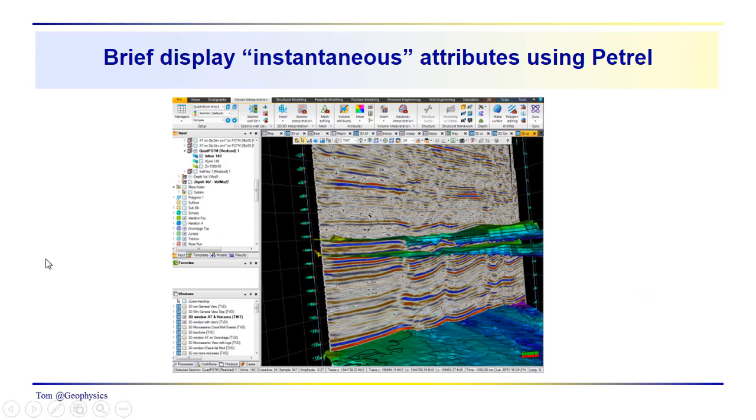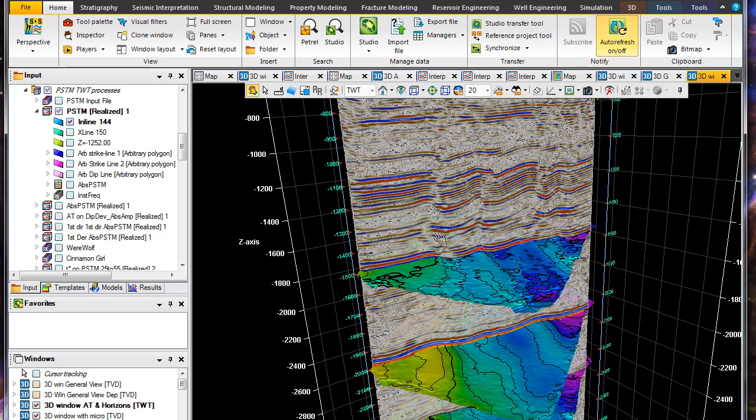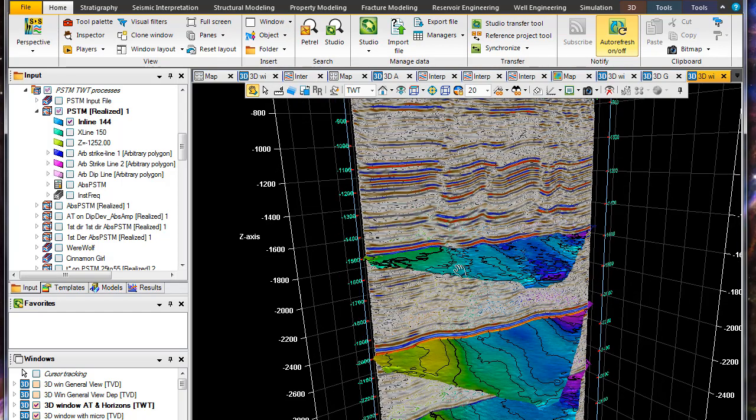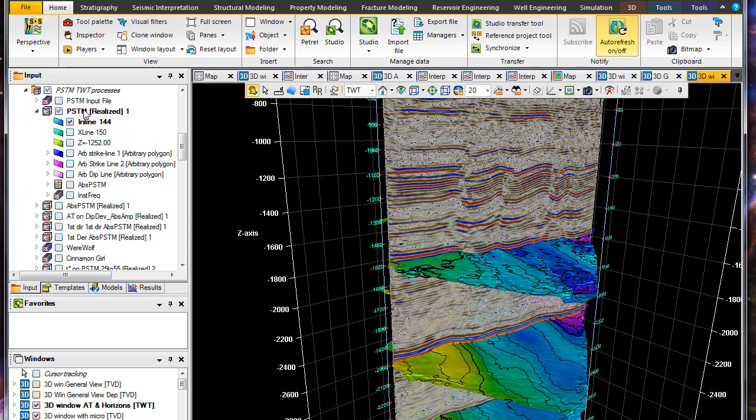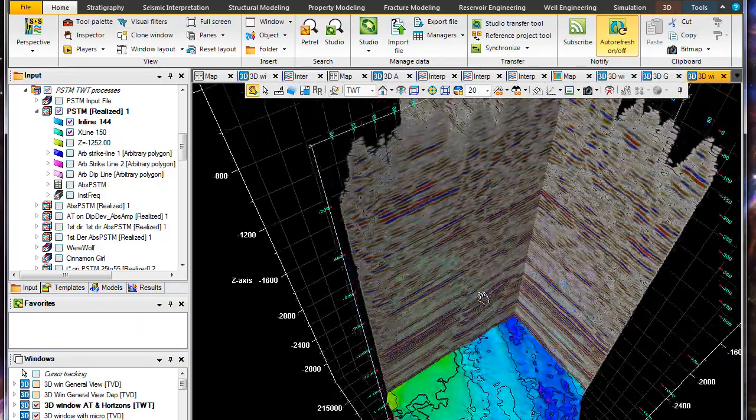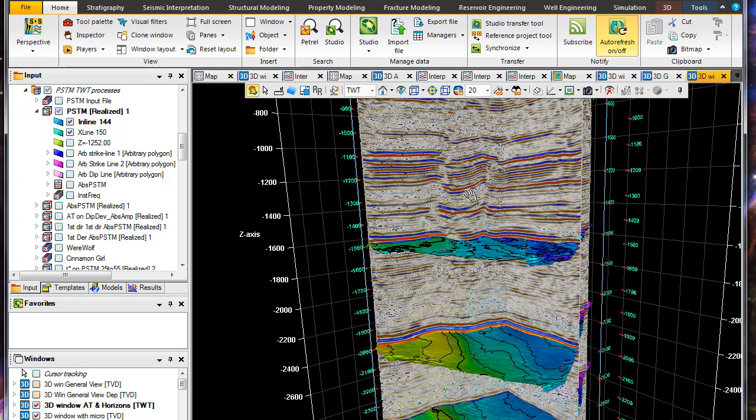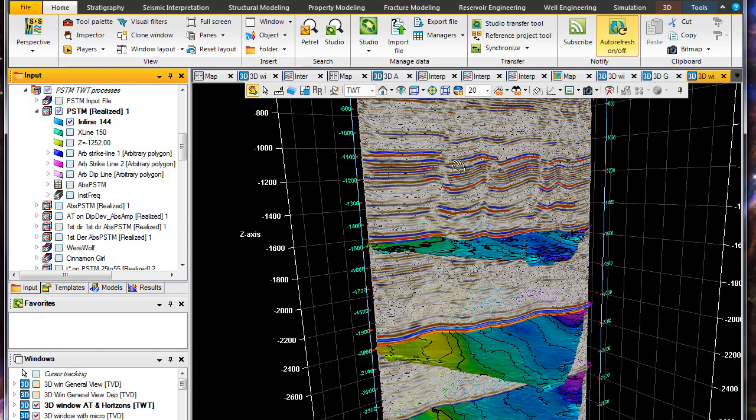Now let's take a look at some seismic data volume here in Petrel. I've brought up a 3D seismic volume - a post-stack time migrated volume. Let me turn on a crossline and rotate things around. I have significant vertical exaggeration here. We're looking at the Marcellus shale. You can see some listeric faults dipping back in this direction. You can see one, two, three, four faults there.